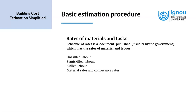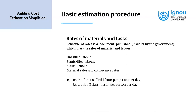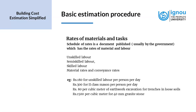These rates can be directly adopted by the estimator and then applied on the quantity of material that the estimator arrives at for his or her own project. The schedule of rates has got different rates for different activities. It could have the wages for unskilled labor per person per day — it could be 180 rupees. Or it could have the wages for second class mason per person per day. It could also have the per cubic meter rate of earthwork excavation for trenches in loose soils, or the rate of per cubic meter of 40 mm granite stone.